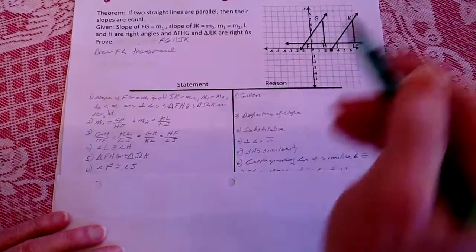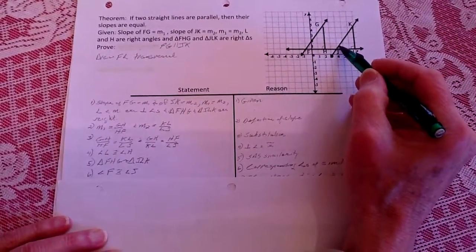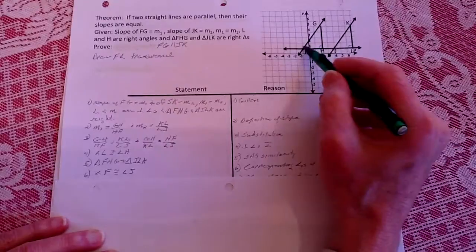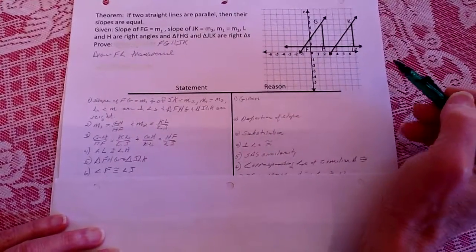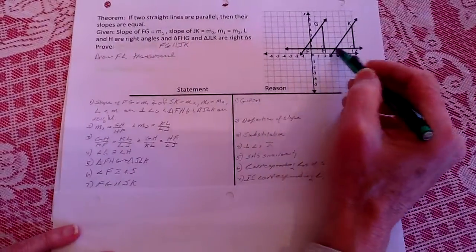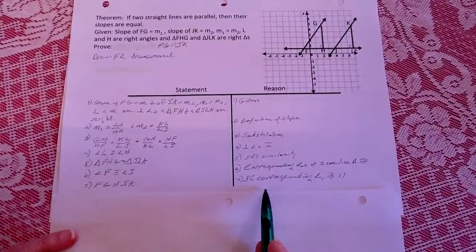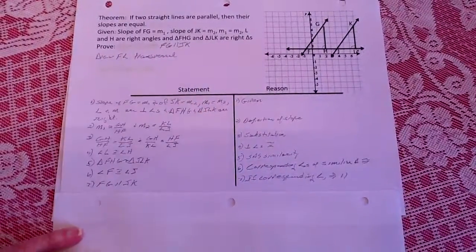From that, because of the corresponding angles, we know that angle F and angle J are congruent because they're corresponding angles of similar triangles. And from that, because they are corresponding angles, we know that these two lines therefore are parallel. So we have just proven that aspect of it.